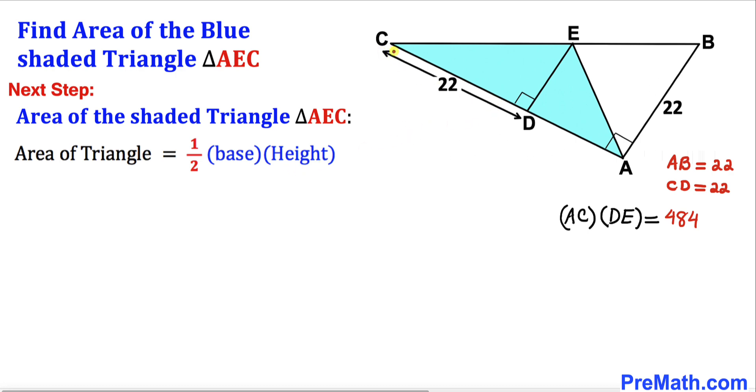For this triangle AEC, the area equals a half times base times height. In our case, the base is AC and the height is DE. We already know that AC times DE is 484.